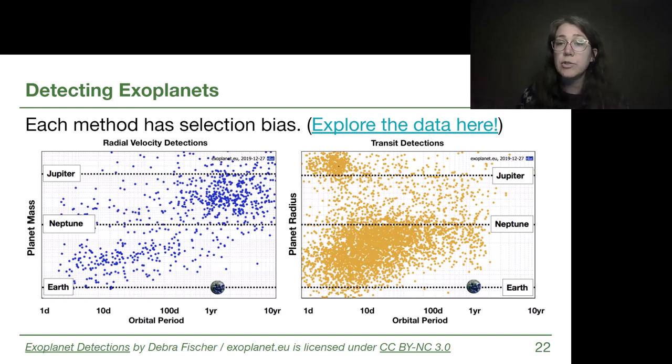And then on the right we have transit detections and you might recognize or notice that there are two main kind of blobs in the upper left corner of that plot with all those yellow points clustered together at very, very short orbital periods and very, very large planet radius. And note now that we are showing radius instead of mass.